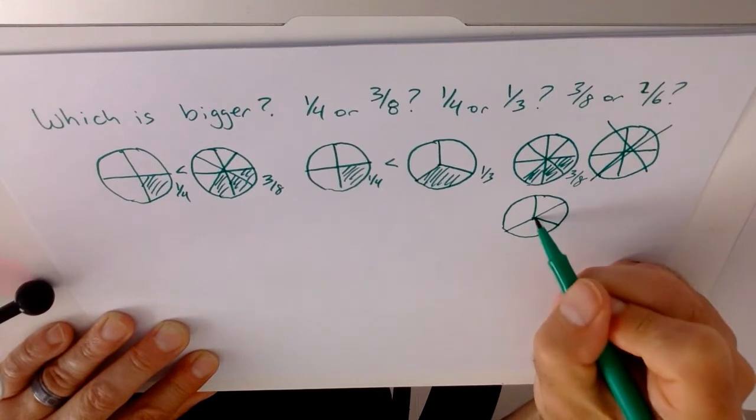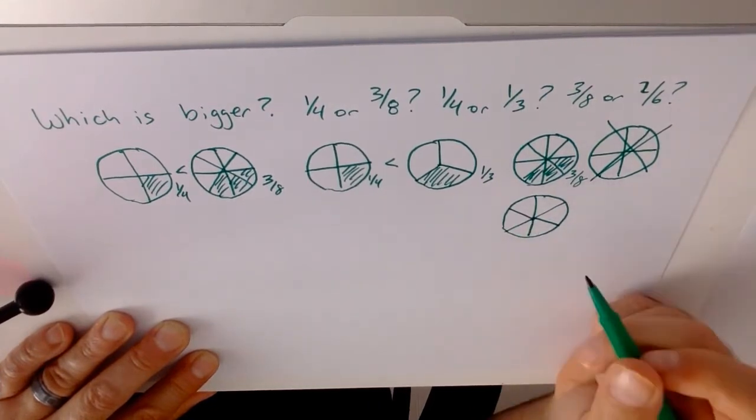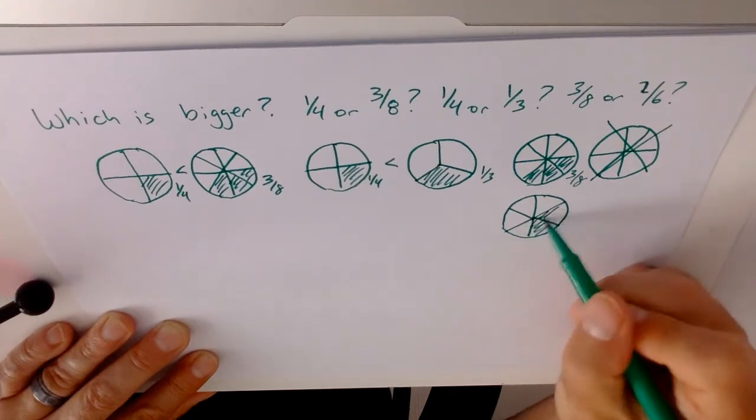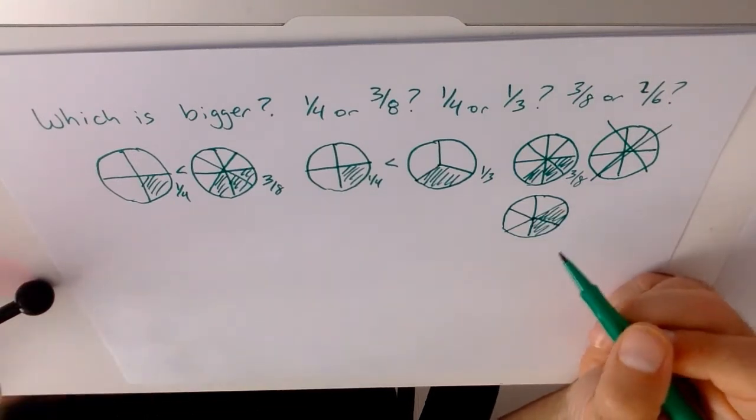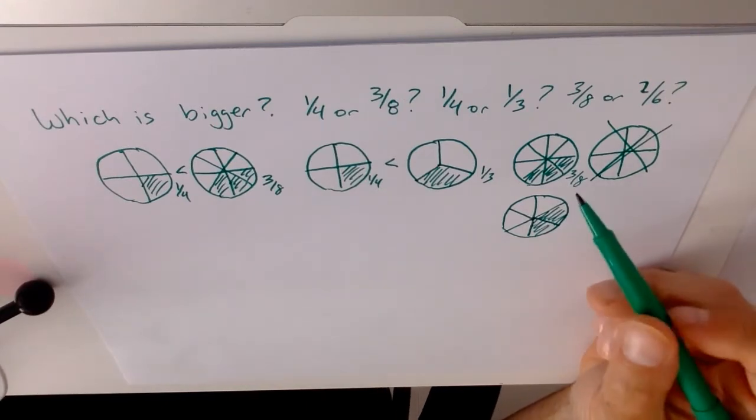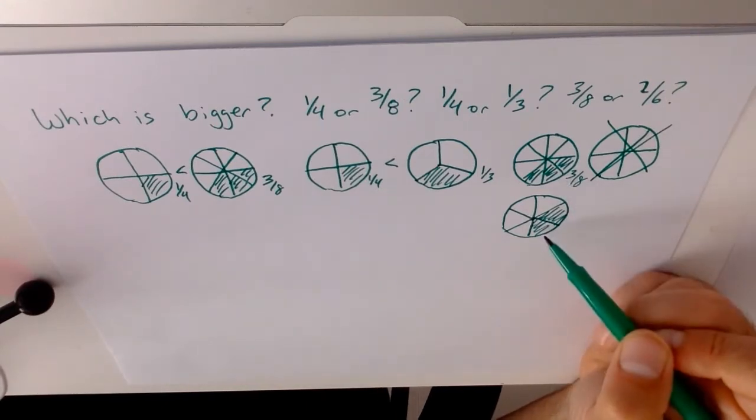Split it once, twice, and three times. And now when you draw your 2 sixths, you'll have a more equal representation. And you can see that 3 eighths is a little bit bigger than 2 sixths.